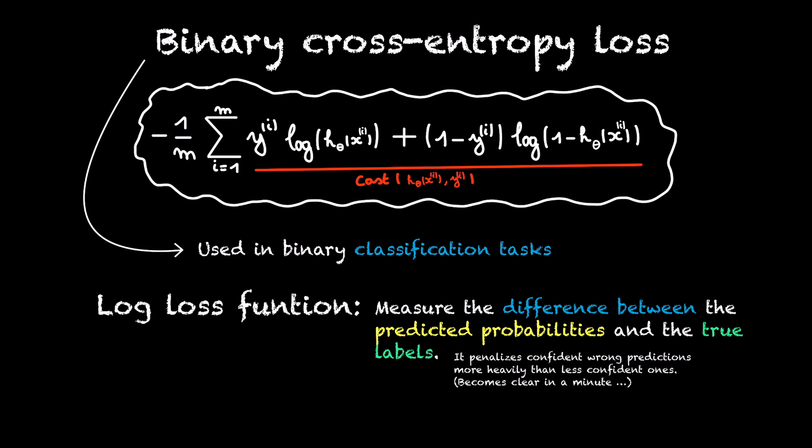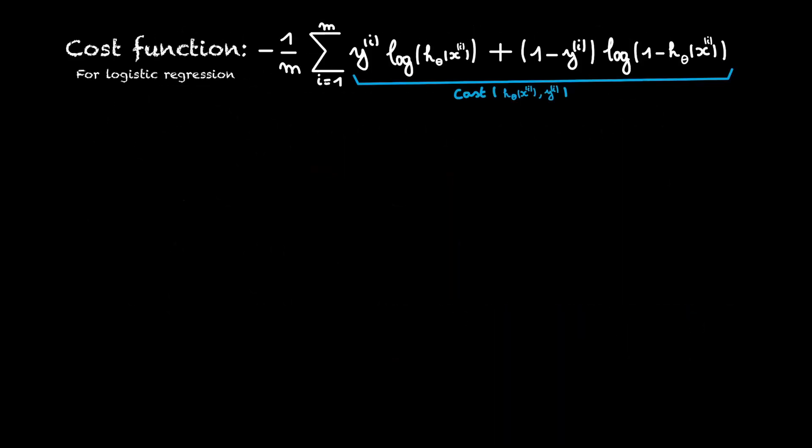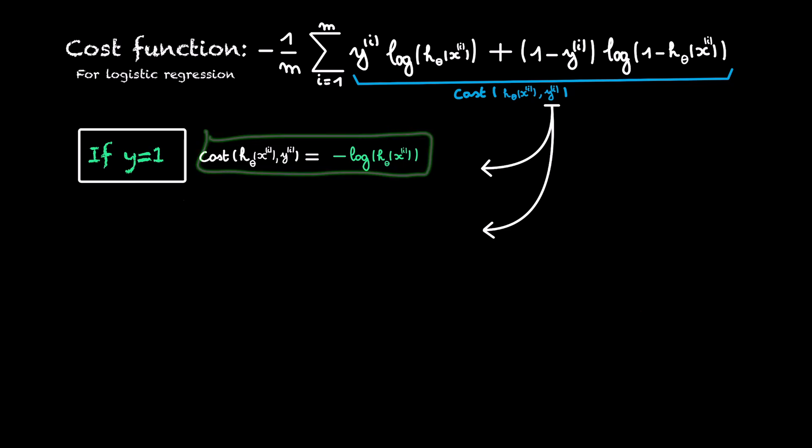As you see, this cost will depend on what the value of our label y is. So our cost can be one of two cases. Either y is equal to one and we will take this cost, or y is zero and our cost will take this form.